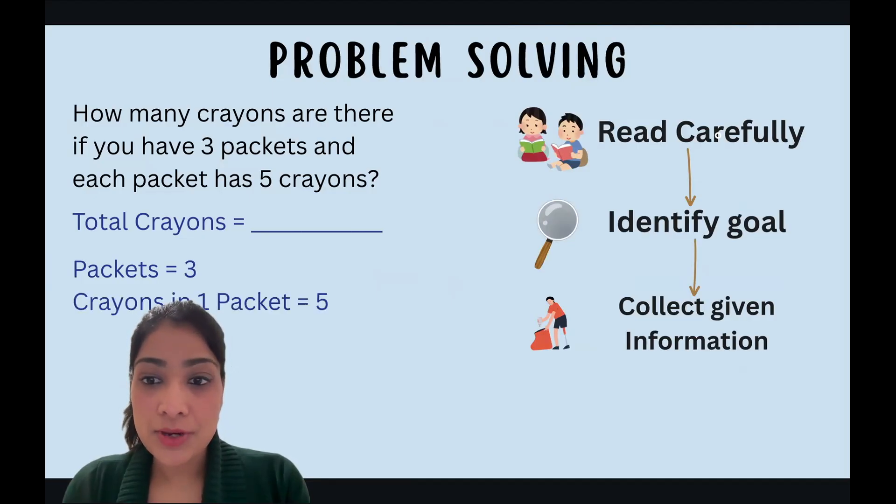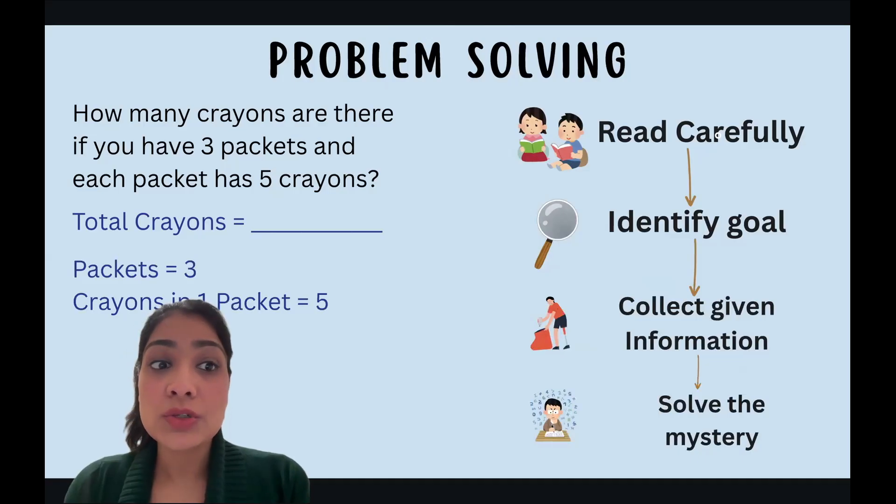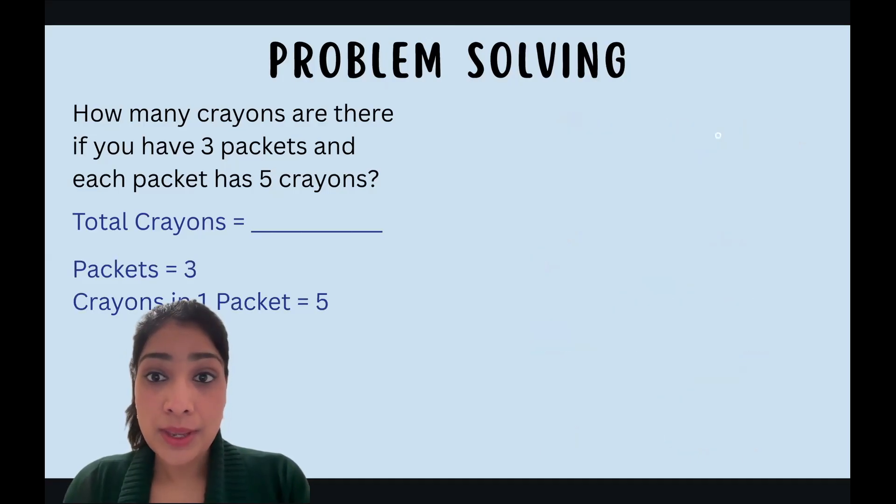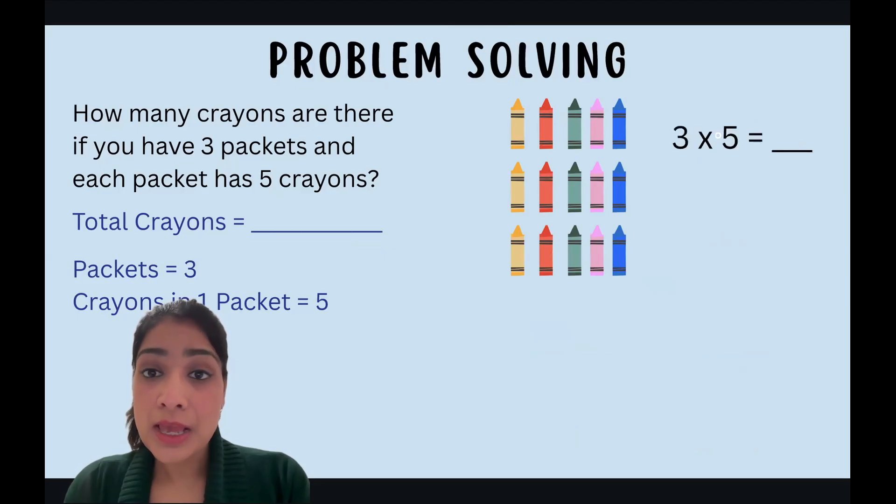Okay, after collecting our information, we are going to solve this mystery. Ready? So to do this we'll use an array. Okay, let's draw our first row. We'll have five crayons, and we have three packets so we'll have three rows. Let's draw our second and third. Now let's write our multiplication expression for this. So number of rows, three times five. And we need to find that. We can use repeated addition to do that. Five plus five plus five. How much would that be? Five plus five is ten, ten plus five is fifteen. So three times five becomes fifteen.